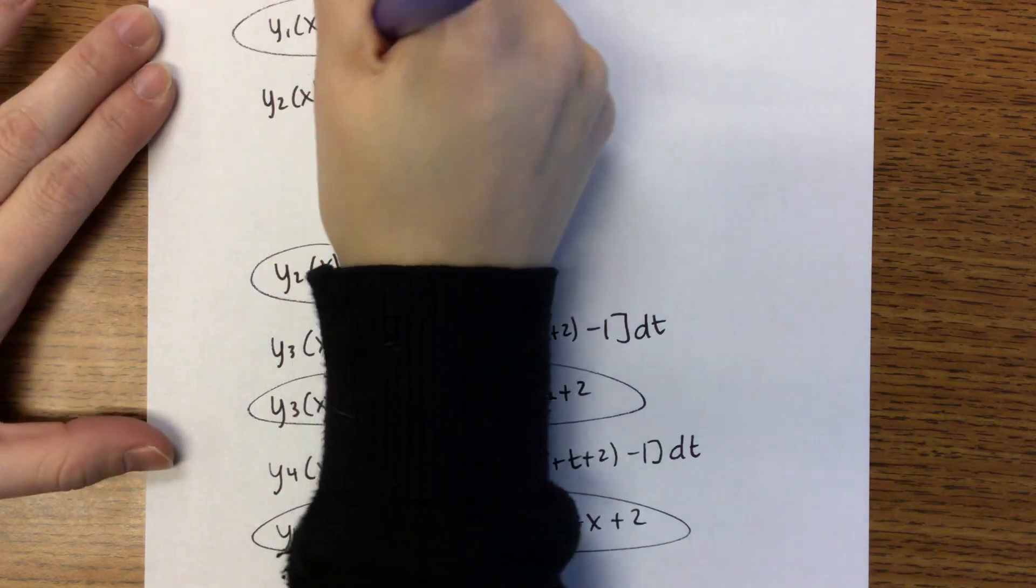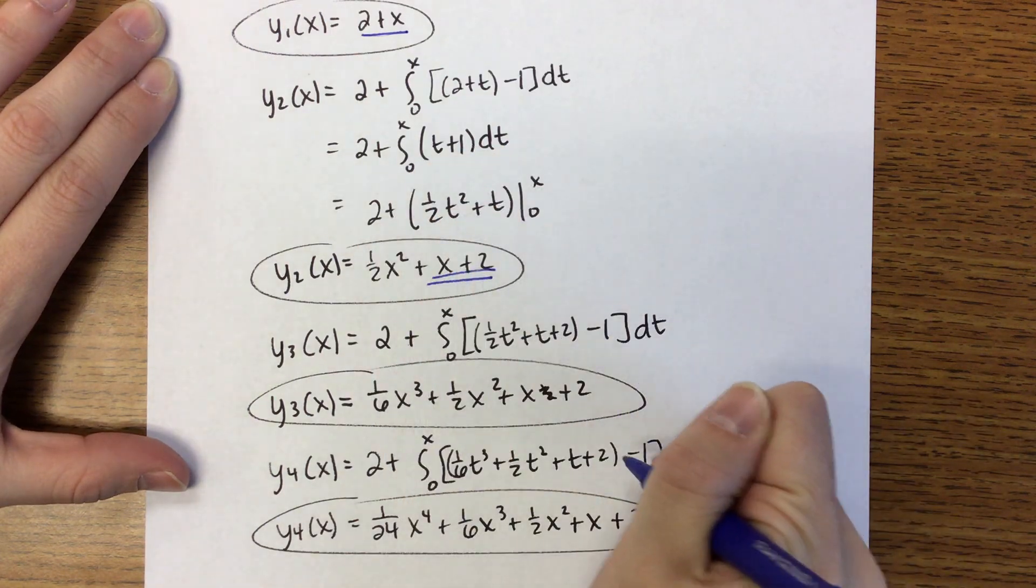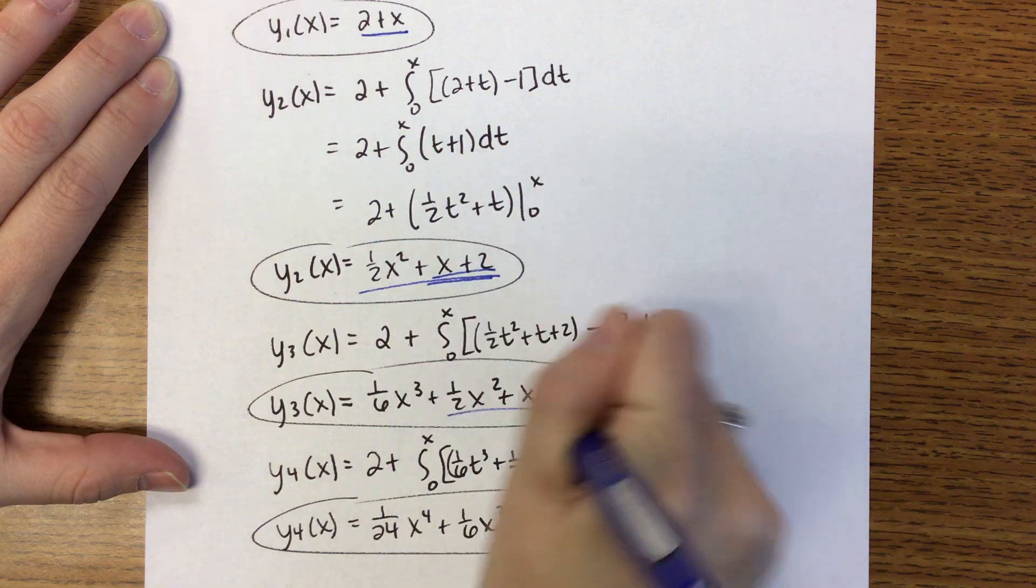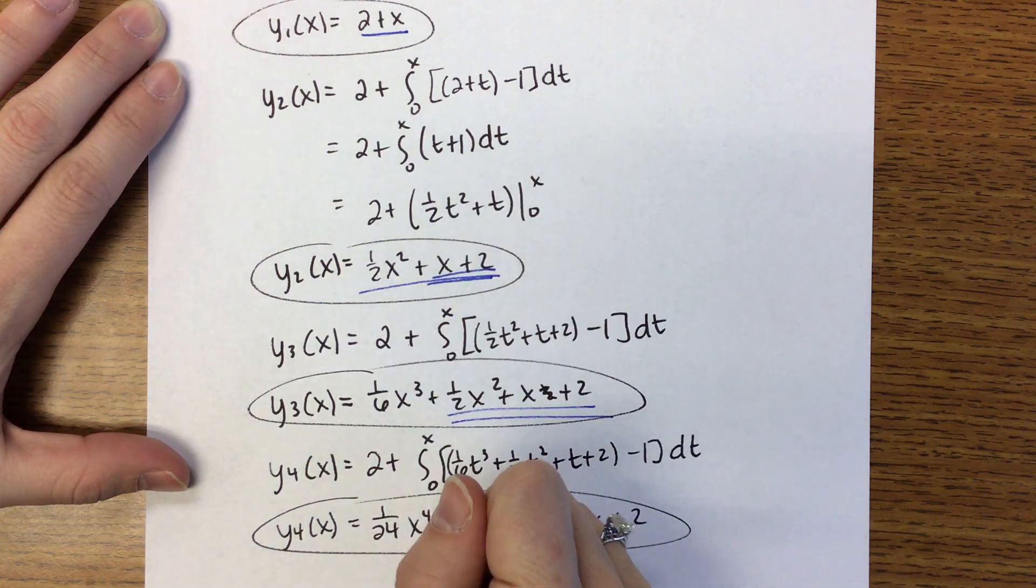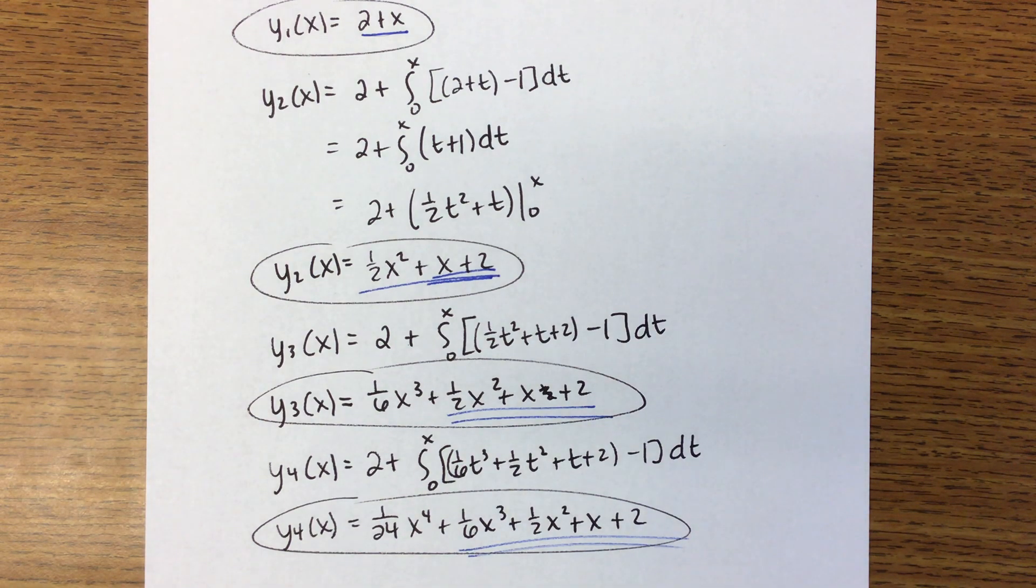Do you all notice that when you find this first approximation it shows up in the second one and that the second one shows up in the third one, that the third one shows up in the fourth one? That's going to happen like 95% of the time so that's a way for you to kind of check that things are going well as it should continue to come up the same way.